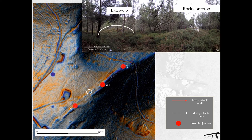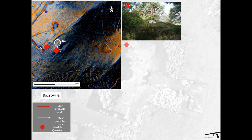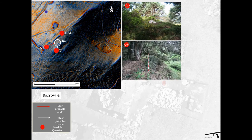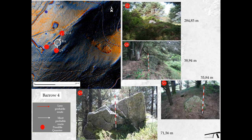Barrow number three is probably the most significant example of close connection between human construction and the possible quarry used for building it — less than 15 meters of distance between a large outcrop at the right of the image and a megalithic tomb at the left. In other cases the links are not so clear. The builders of barrow number four had several possibilities. For instance, quarries B and C were pointed out in the analysis as the most probable sites for taking rocks, given the small distance between the tomb and quarry as well as the presence of a huge rock emerging from the soil.